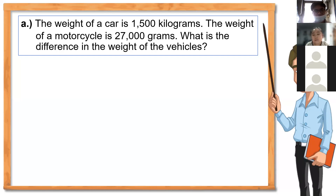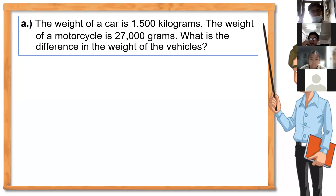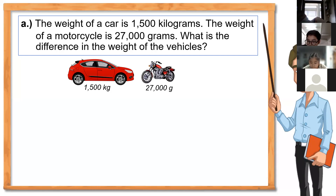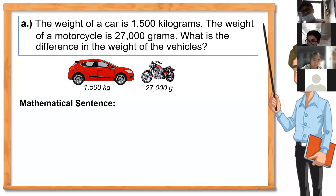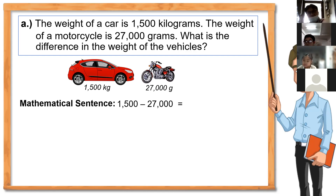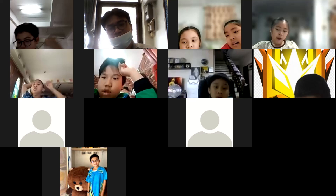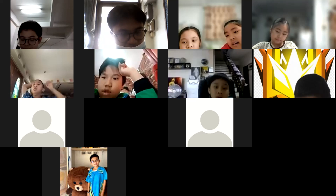All right, let's continue. This is minus because the question is find the difference. The car is 1,500 kilograms and the motorbike is 27,000 grams. The mathematical sentence: 1,500 kilograms minus 27 grams.